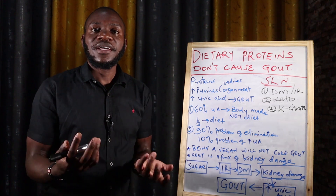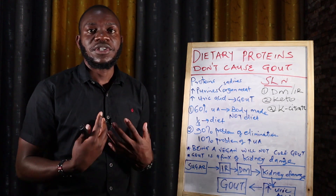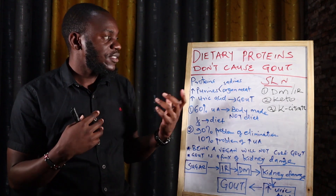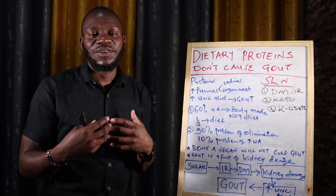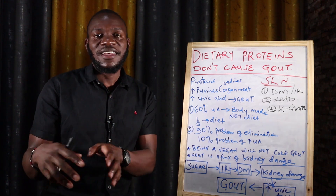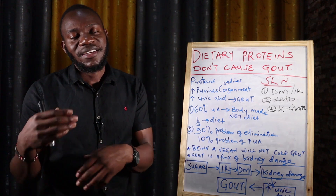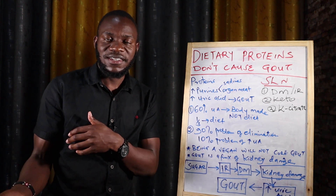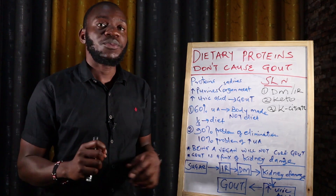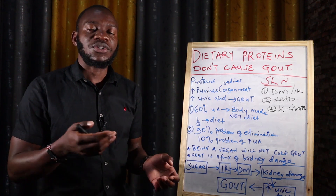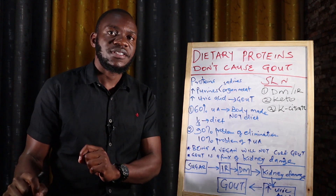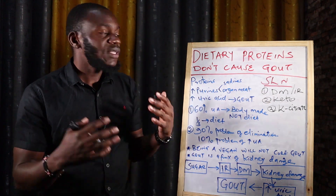So where does uric acid come from? Uric acid is a byproduct of the breakdown of proteins. When you break down proteins you get purines, and when you break down purines the end product is uric acid. You are supposed to form uric acid and excrete it through urine, but when it accumulates in your bloodstream it crystallizes and precipitates in your joints, bringing about gout.